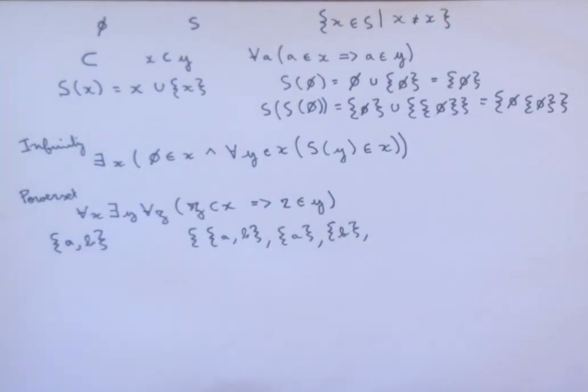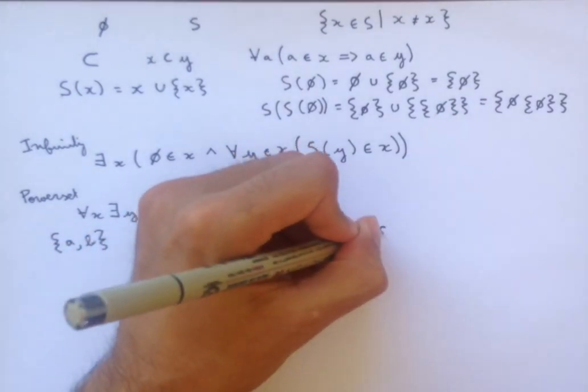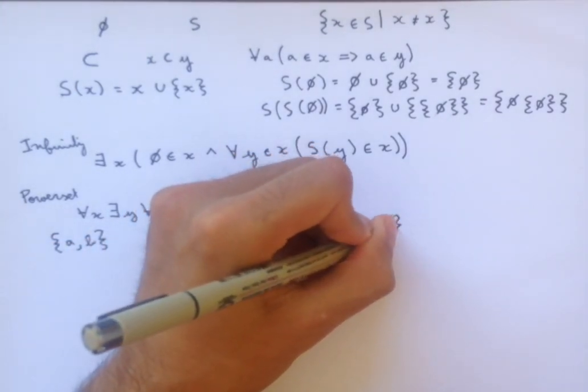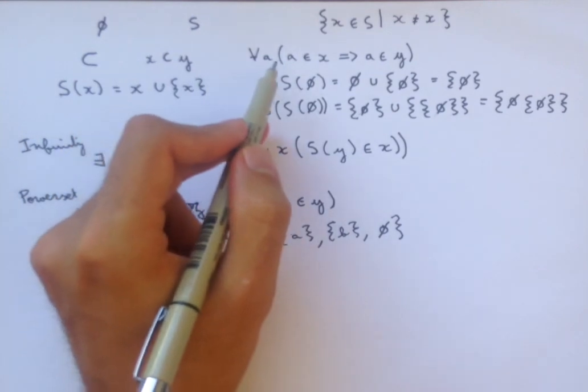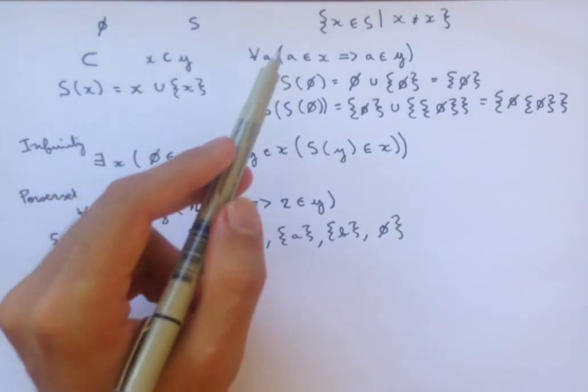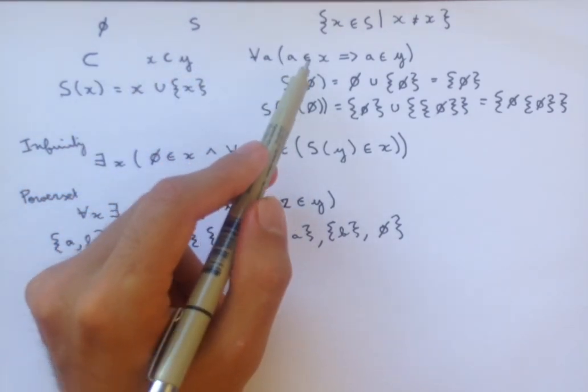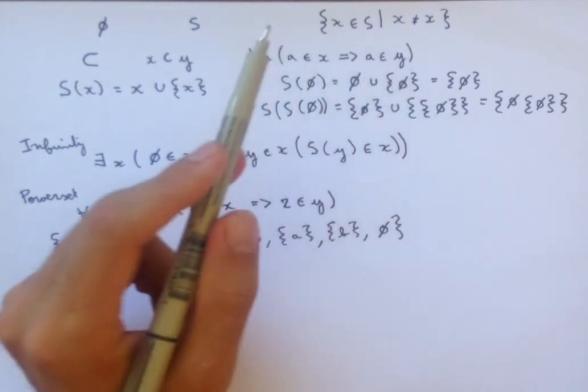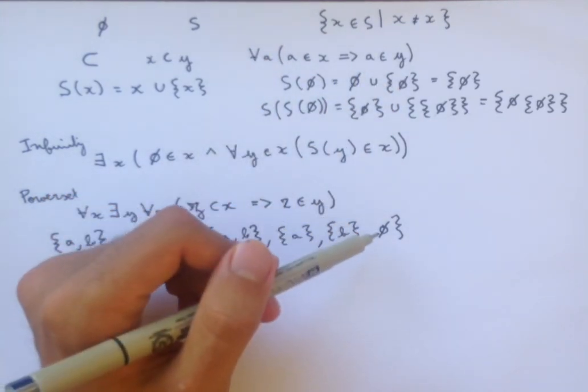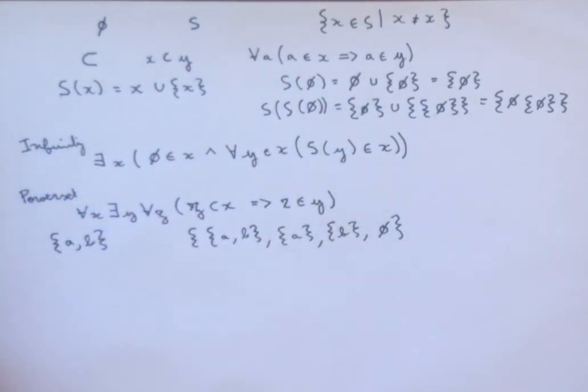another subset that you might not have thought of is the empty set. Because, if we go back to our definition of what a subset is, if A is in X, then A is in Y. Well, if any element is in the empty set, then it is also in the set A and B, because there are no elements in the empty set.